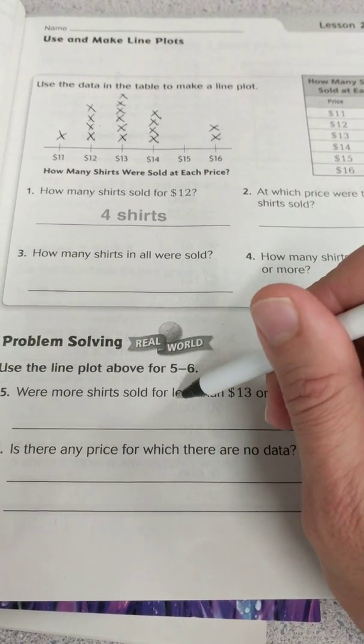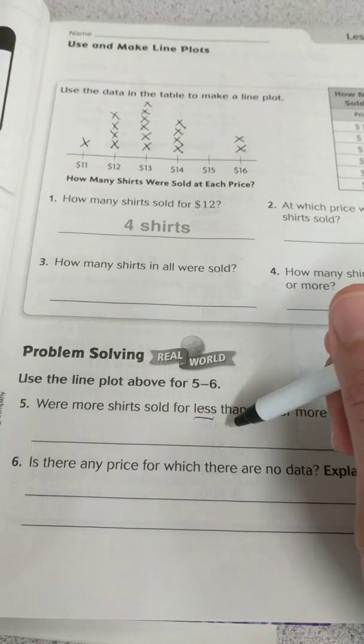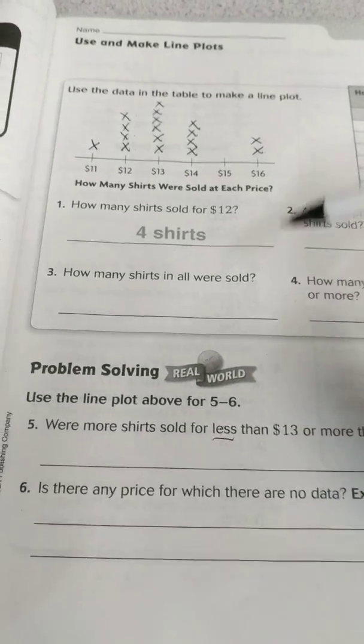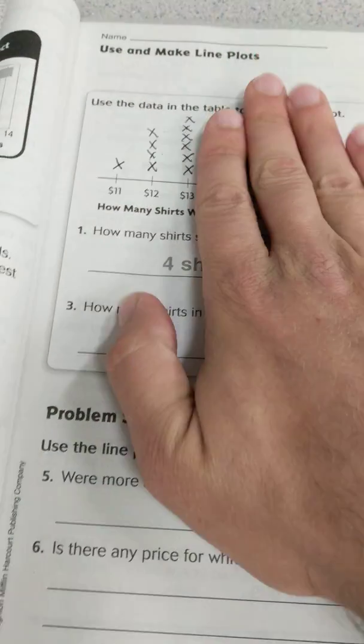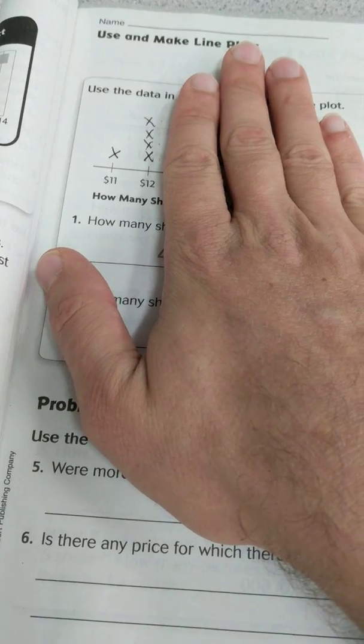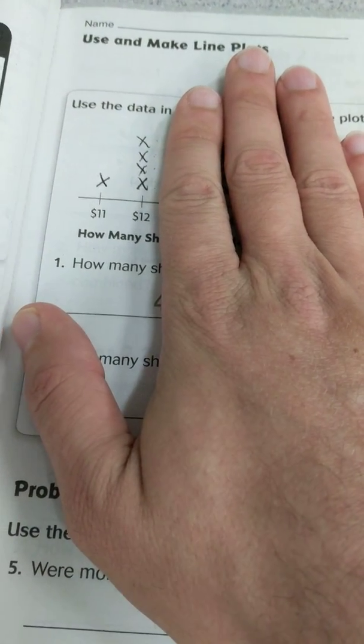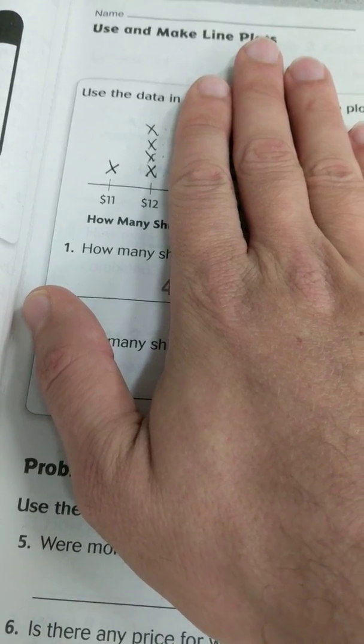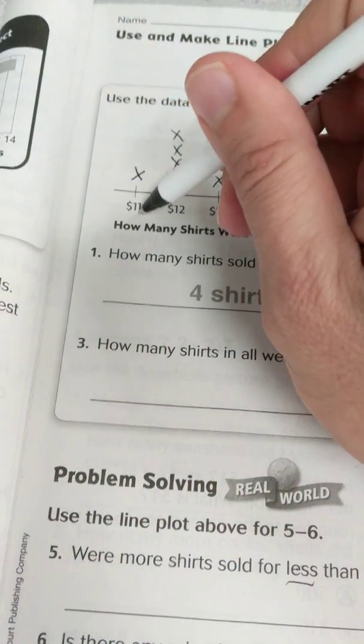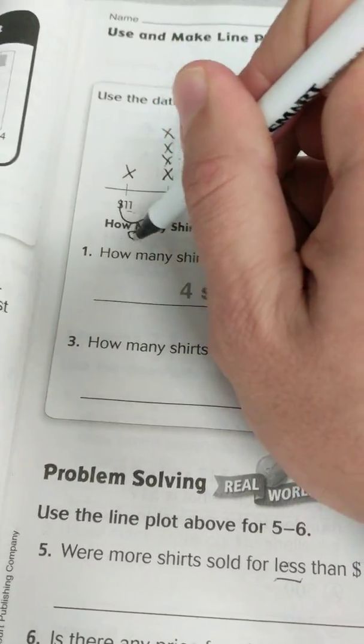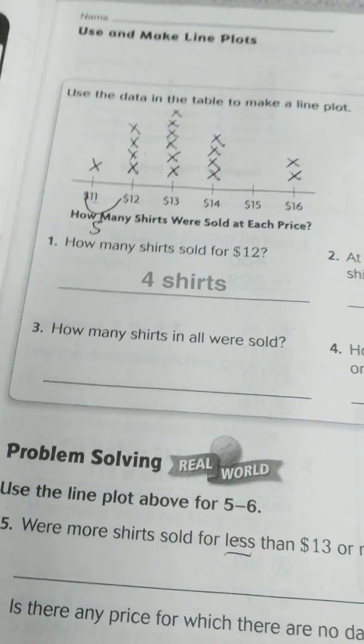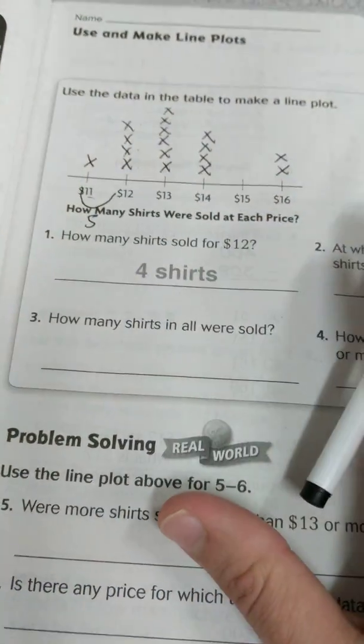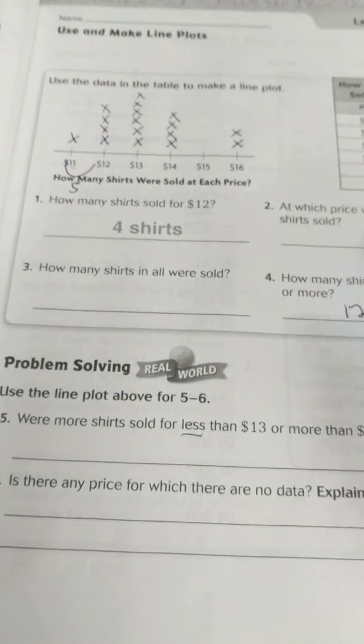For less than $13. It didn't say $13 and less, it said less than $13. So I'm going to look at $13, cover that up, and look what else I have. I have $11 and $12. And it looks like we have 4 for $12 and 1 for $11, so that's 5. So I would just make a mark here. And that's fine to write on this to help make sense, especially answering the questions.